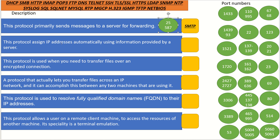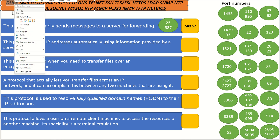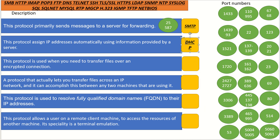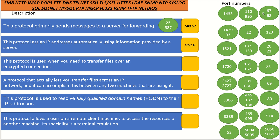This protocol assigns IP addresses automatically using information provided by a server. That is Dynamic Host Configuration Protocol — it assigns IP addresses to devices within a network automatically. What port numbers does it use? It uses ports 67 and 68, which are UDP ports.